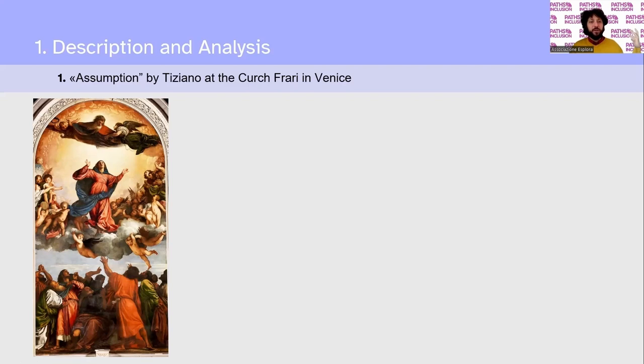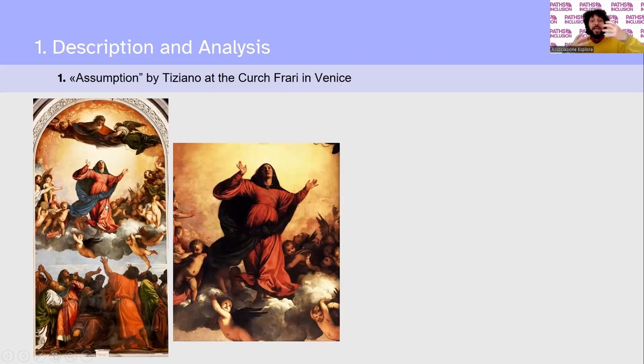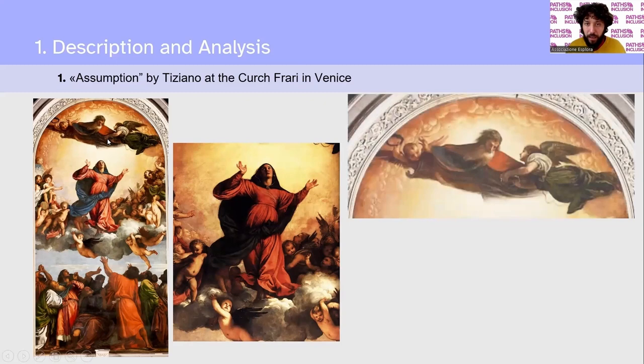So, let's speak about this painting. First of all, it is divided in three. There is the lower part with the population, in the middle there is the Holy Mary surrounded by angels, and in the upper part, God. It is divided in three — one, two, three — but it is also divided in two.